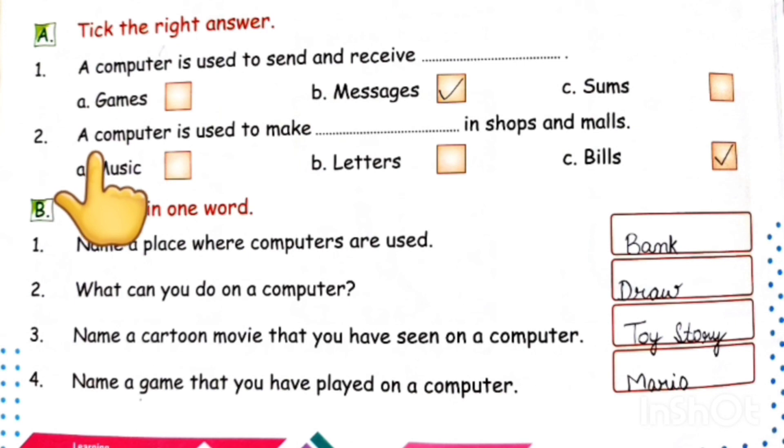Next one is, a computer is used to make dash in shops and malls. Computer da use. Shops and malls te wich ki bon aarli kita janda hai? Option A, music. Option B, letters. Option C, bills. Answer is, bills. A computer is used to make bills in shops and malls.